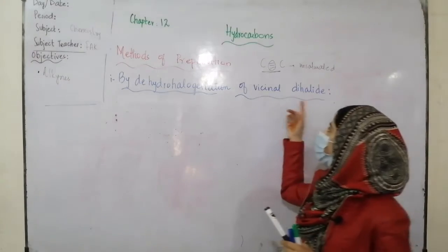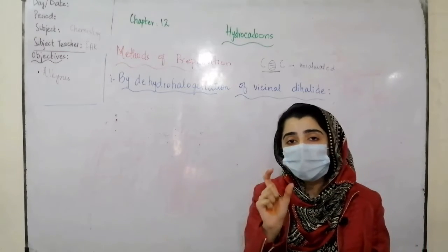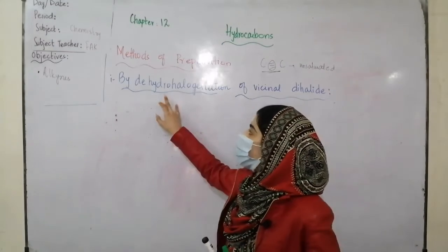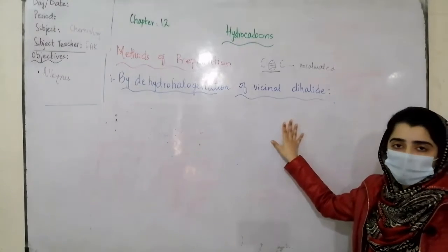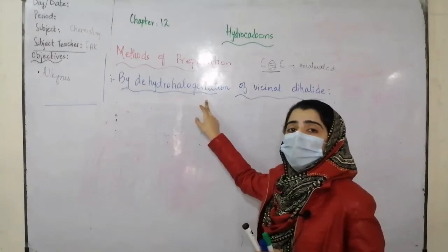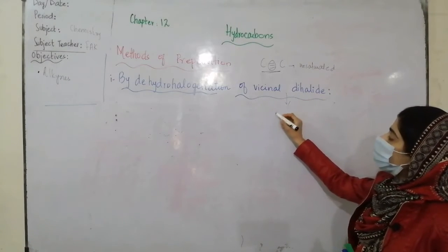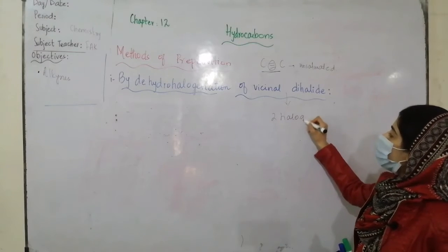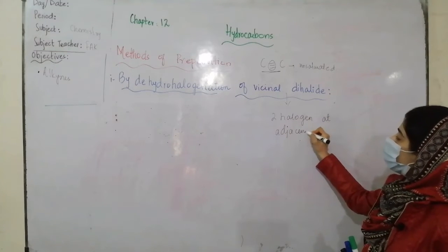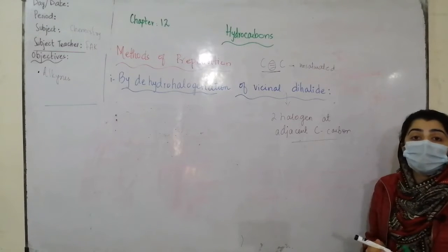The first method is dehydrohalogenation of vicinal dihalides. In dehydrohalogenation, a hydrogen halide is removed from an alkyl halide. For alkynes, we use vicinal dihalides. A vicinal dihalide has two halogen atoms at adjacent carbon atoms — two halogen atoms on two carbon atoms that are side by side.